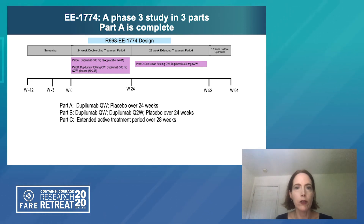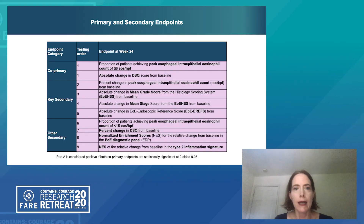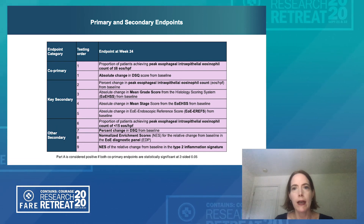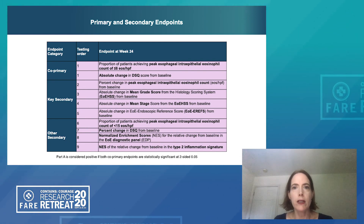This schematic breaks down the different parts of the trial — Part A, Part B evaluating two different dose regimens versus placebo, and Part C as an active therapy extension. For this trial, we utilized a co-primary endpoint in line with the FDA draft guidance. The DSQ, the Dysphagia Symptom Questionnaire, is a validated questionnaire looking at dysphagia, where patients record their symptoms in a diary daily, providing information from each day about their experiences with dysphagia.